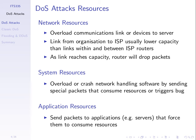A DOS attack attacks resources, and we can classify them based on what types of resources they attack — what they try to exhaust. It could be network resources: an attacker can try to overload our network. Maybe we have a link coming into our web server that has a capacity of 100 megabits per second. If the attacker sends traffic approaching that capacity, normal data from normal users may be delayed or not sent across that link, exhausting network resources by overloading the links.